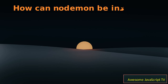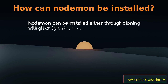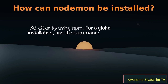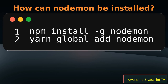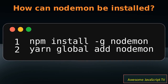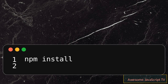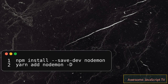NodeMond can be installed either through cloning with Git or by using NPM. For a global installation, use the command, or using YARN. For a local installation, use the command, or using YARN.